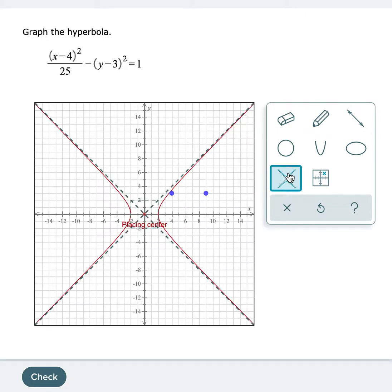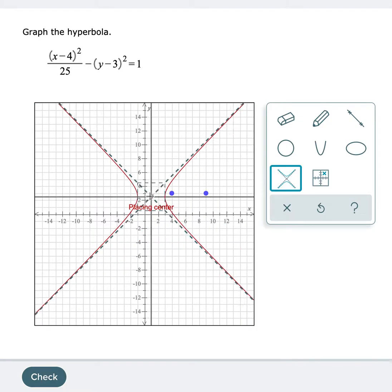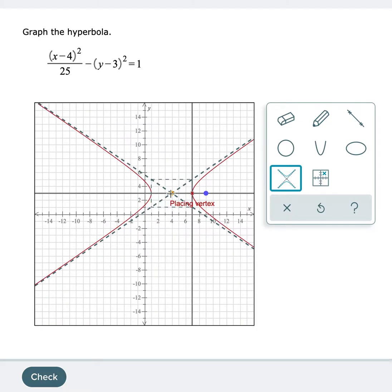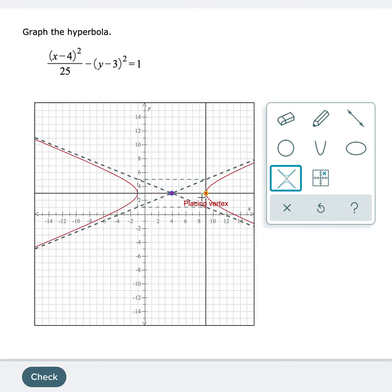I'm going to click on my hyperbola symbol. I'm going to click on the center first, and then I'm going to click on the vertex. And then it says, place the asymptote.